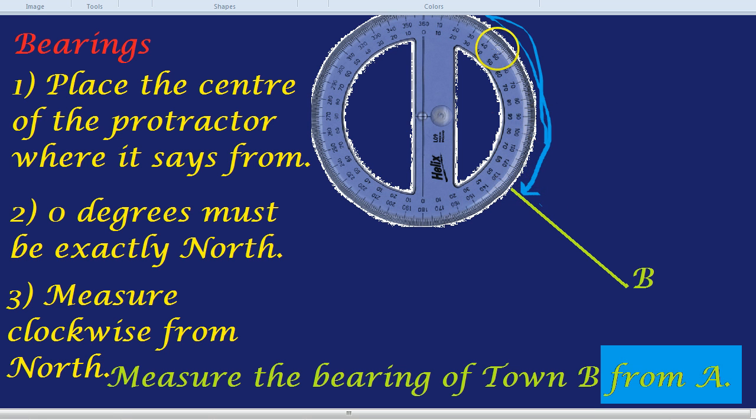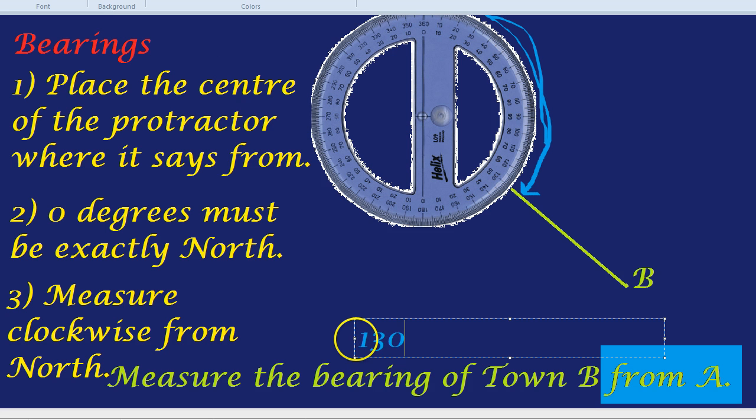Now, it's an obtuse angle, so of the two numbers, we're going to look at the 130. And indeed, B is 130 degrees. Its bearing is 130 degrees from A.